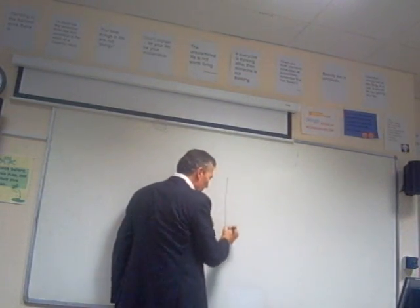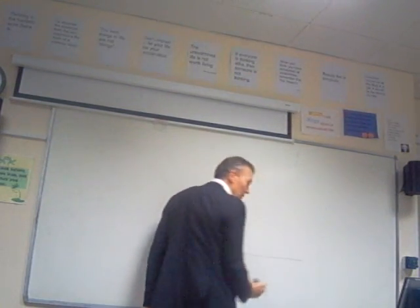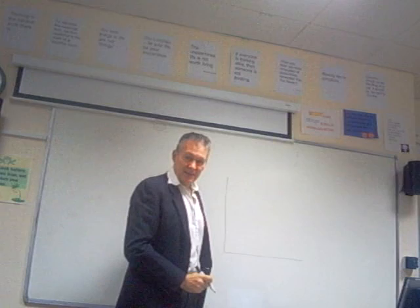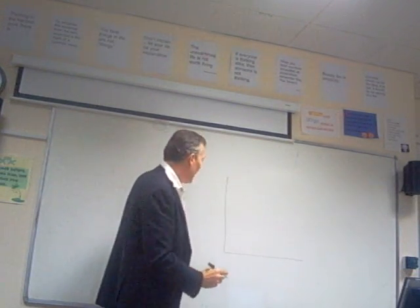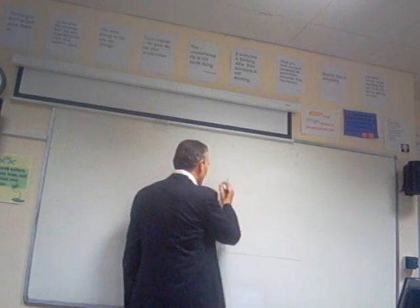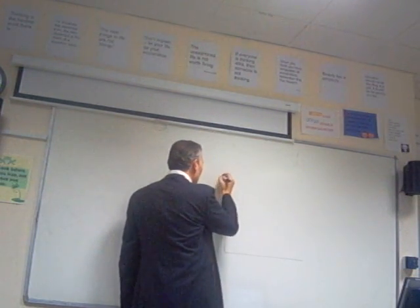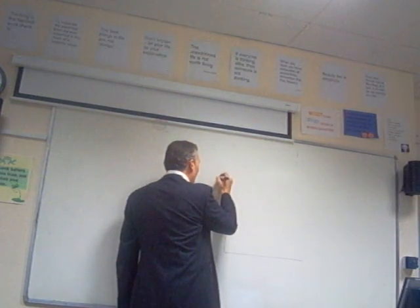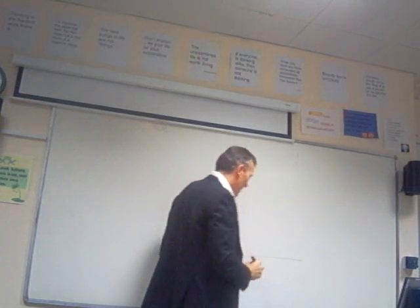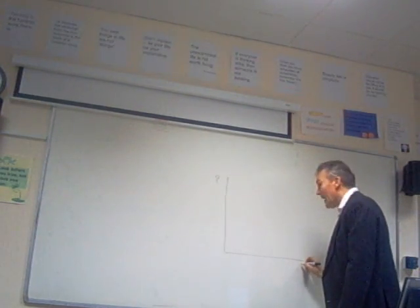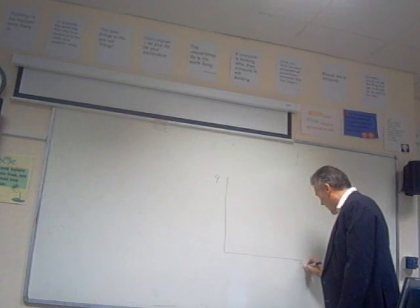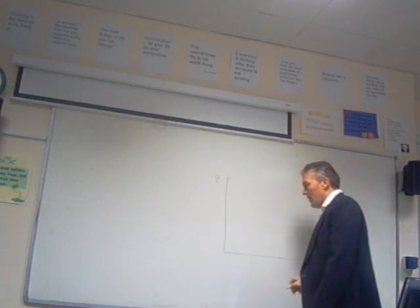We start by drawing the typical axes — x and y axes — that we see in our supply and demand diagram, with price on the vertical axis and output on the horizontal axis.